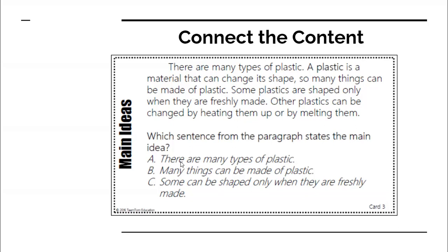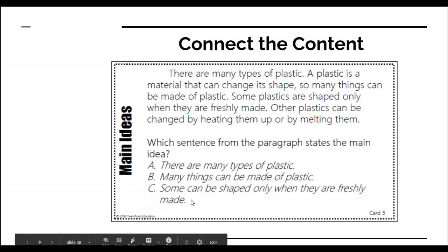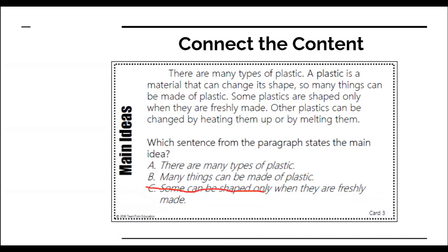The answer choices are: A) There are many types of plastic. B) Many things can be made of plastic. C) Some can be shaped only when they are freshly made. We know that C is not the answer.